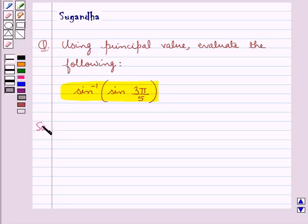Let's proceed with the solution now. We need to find the value for sine inverse of sine 3 pi by 5.